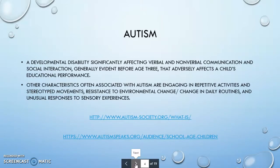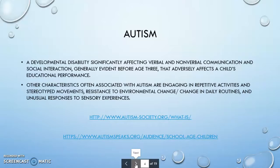Autism is a developmental disability significantly affecting verbal and nonverbal communication and social interaction. It's generally evident before age three and it adversely affects a child's educational performance. Other characteristics often associated are engaging in repetitive activities, stereotyped movements, resistance to environmental change or a change in daily routines, and unusual responses to some sensory experiences. Two links for more information about autism are included.